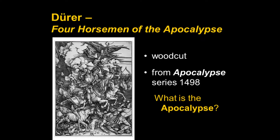Dürer is very famous for his woodcuts and engravings. Probably the best known of his woodcuts, because it is in the survey classes, is the Four Horsemen of the Apocalypse. It is not a single-leaf print — it's not sold separately. Sometimes you will see them in museums because the book in which these appeared has been cut up so dealers could sell more. At any rate, this is from Dürer's series published in a book called The Apocalypse, published in 1498.